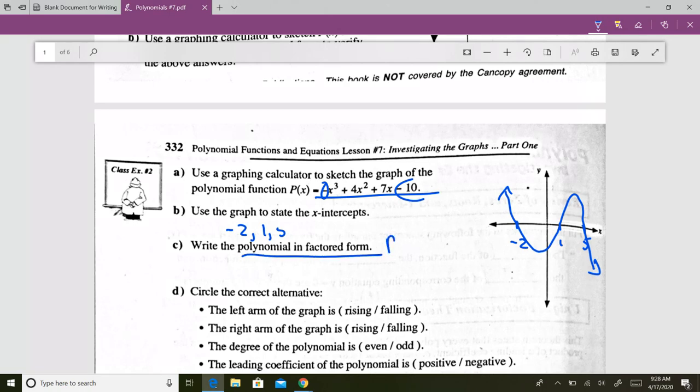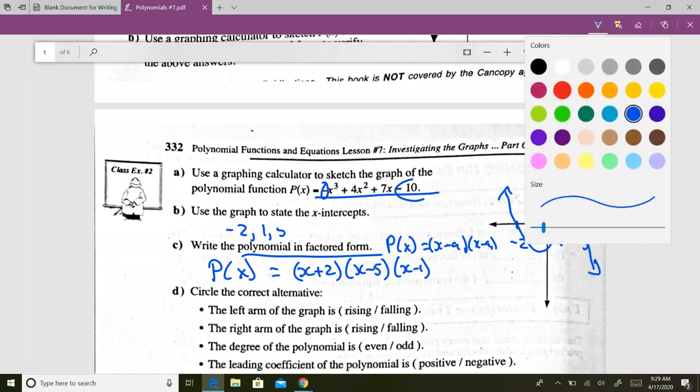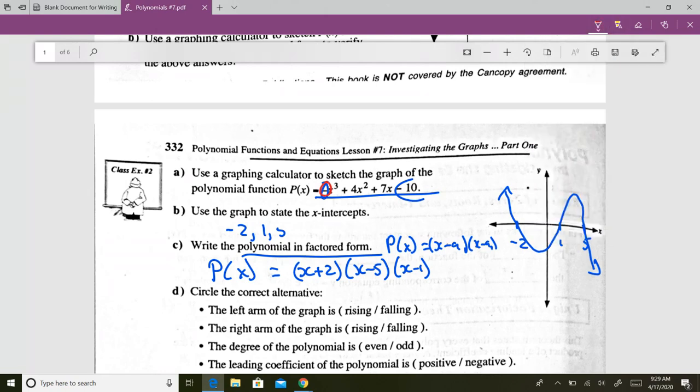Write the polynomial in factored form, so that is essentially saying, x minus a1, x minus a2, blah, blah, blah. So there we go, P equals x plus 2, x minus 1, x minus 5. And the trick here is, since the leading coefficient is negative, we must put a negative there.